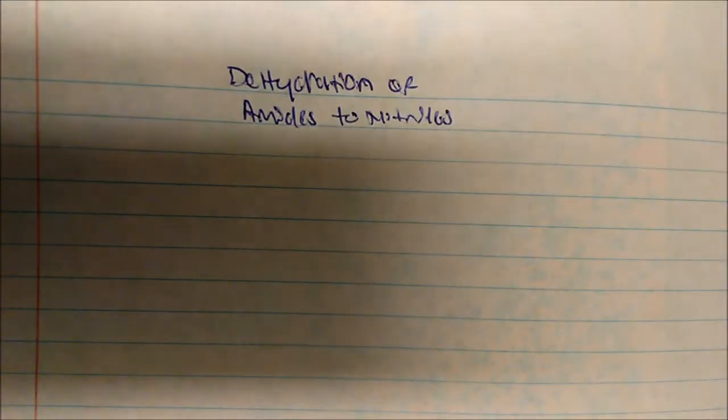So let's talk about the dehydration of amides to nitriles, and we're going to talk about the special reagent here. We know what amides look like - it's a carbonyl that has some nitrogenous compound bonded adjacent to it.